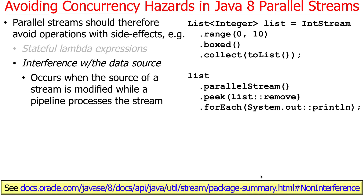The other problem is if you write code that interferes with the data source. If you have a source of data and you change the data while the stream is running, bad things will happen. This link here talks about non-interference — or how you're not supposed to have interference. The inverse is where the problems come: when you have interference.